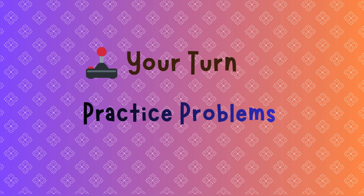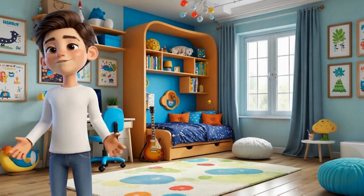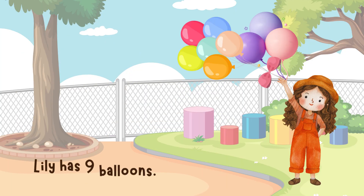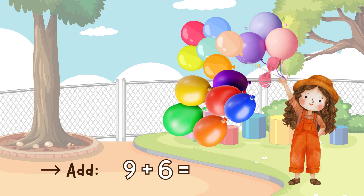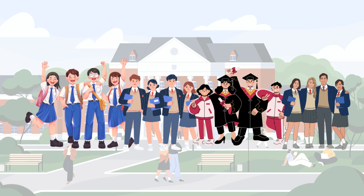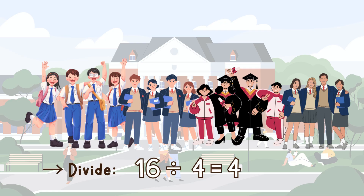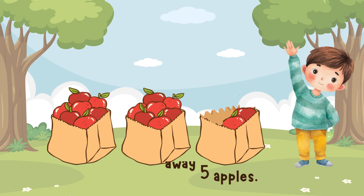Now it's your turn to try three quick ones. Pause the video if you want more time. Lily has nine balloons. She buys six more. How many now? Add — nine plus six is fifteen. There are sixteen students. They are split into four equal teams. How many in each team? Divide: sixteen by four equals four.